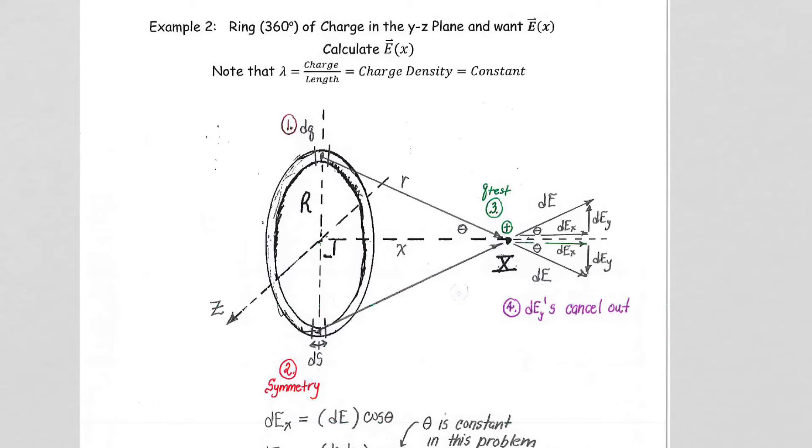In this example, we're going to look again at a one-dimensional line charge, but now taken into the shape of a full circle. The perspective is a little bit different, so let's make sure our eyes are adjusting properly to the perspective that's here.